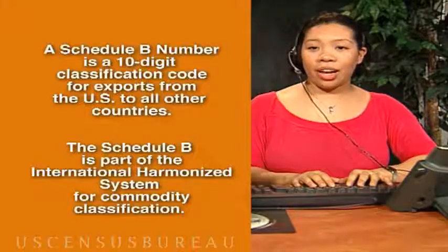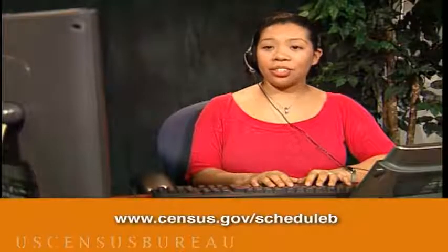If you have Internet access, I'll show you. Sure. What's the address? www.census.gov/scheduleB — it's all one word and all lowercase.